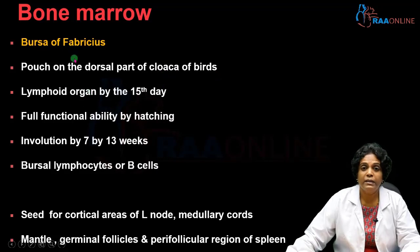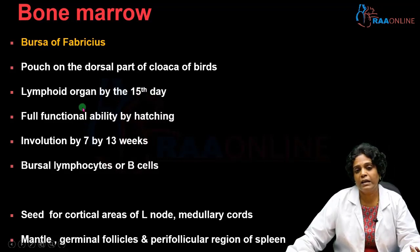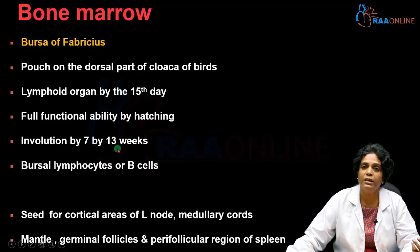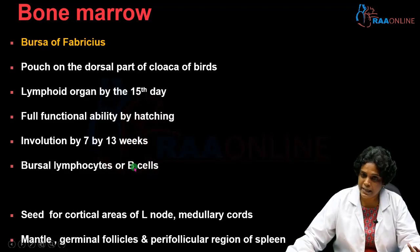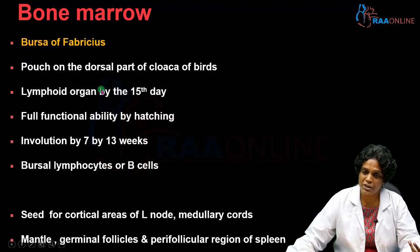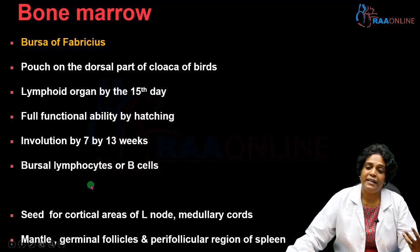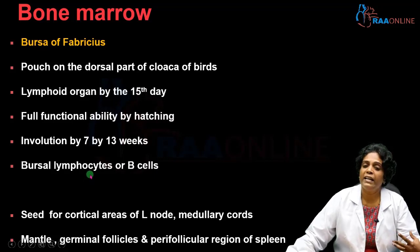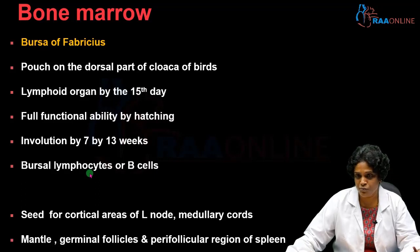In birds, the Bursa of Fabricius develops by the 15th day during embryonic life and becomes fully functional when the bird hatches from the egg. It starts to involute by the 7th or 13th week. B cells are called Bursa lymphocytes because they got their letter designation from the Bursa of Fabricius. The B lymphocytes that develop in the bone marrow — the primary lymphoid organ — migrate to the peripheral lymphoid organs and get seeded at various sites within them.